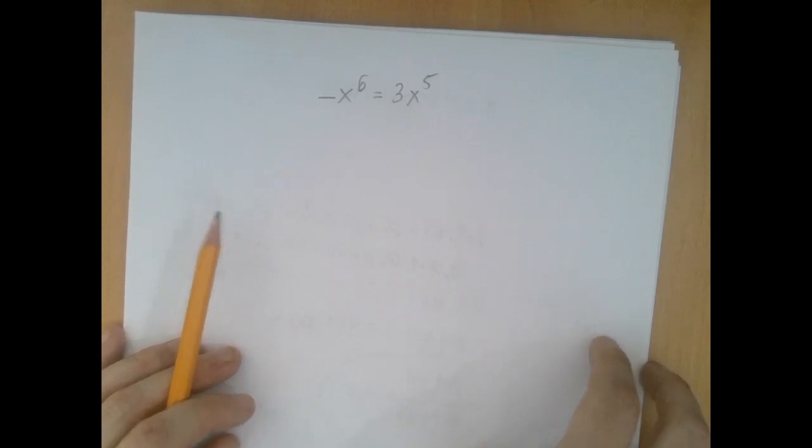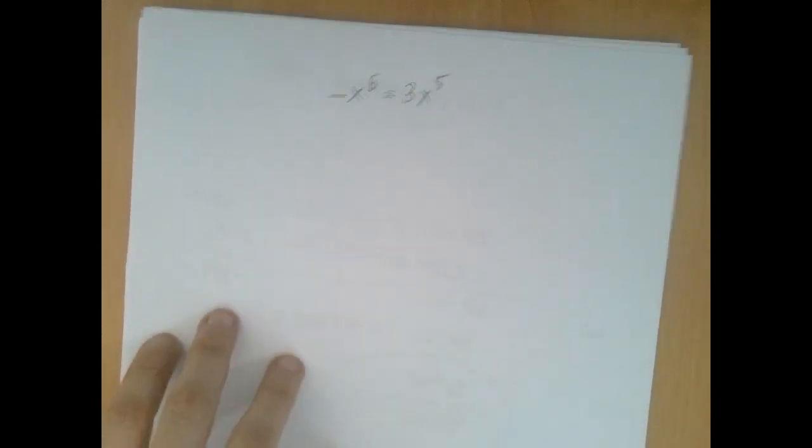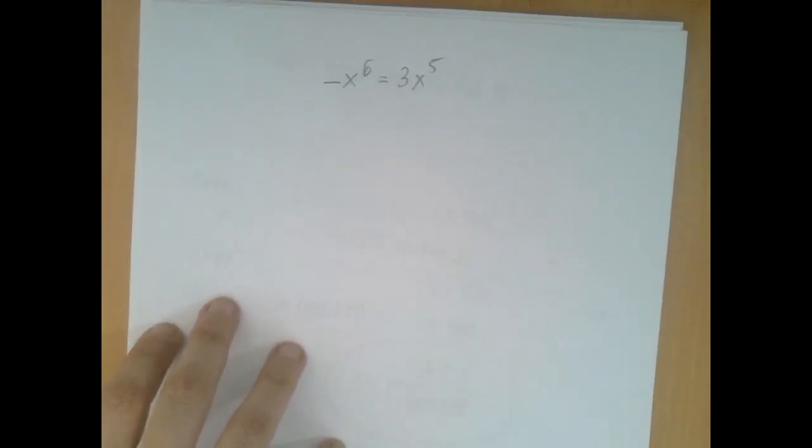Because this equation is of a higher degree than one, that means we need to wipe out one side to zero, factor the other side, and apply the zero product rule.